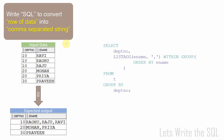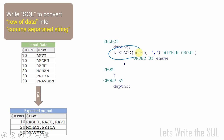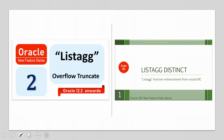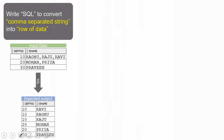So this is the query we have seen. The key learning here is the LISTAGG aggregation function. Though this function was introduced in 11g, there are a lot of new enhancements done in 12c and also in 19c. I have already covered all this information and the links to those videos are given in the description. Now let us see the second scenario: how to convert a comma-separated string into a row of data.